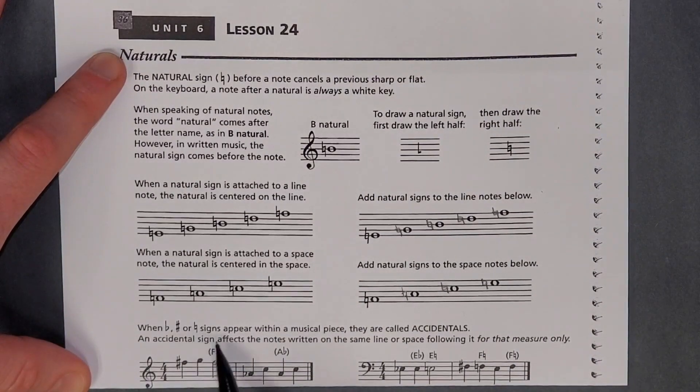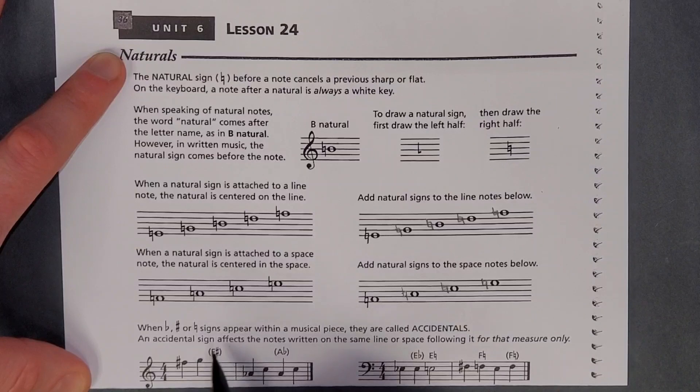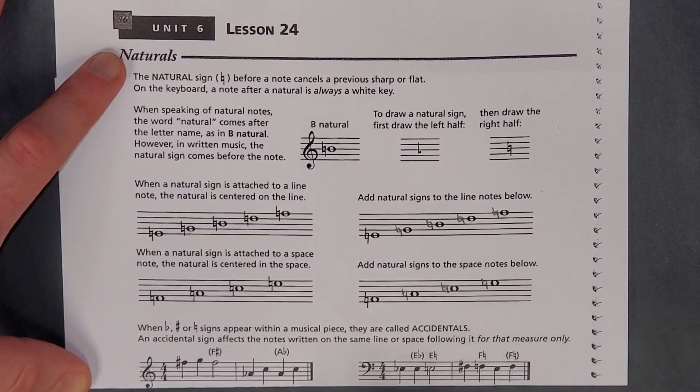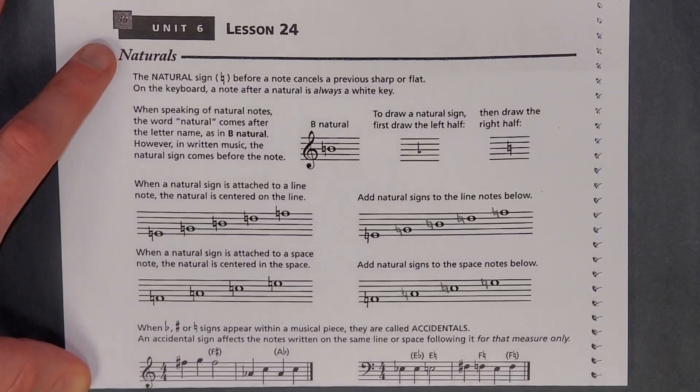When flat, sharp, or natural signs appear within a musical piece, they are called accidentals. An accidental sign affects the notes written on the same line or space following it for that measure only. So sharps, flats, and naturals are only good for one measure.